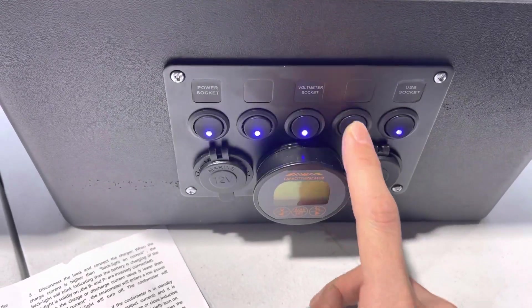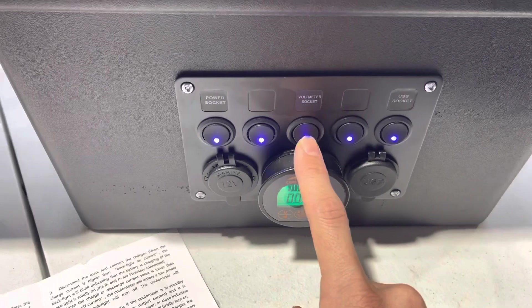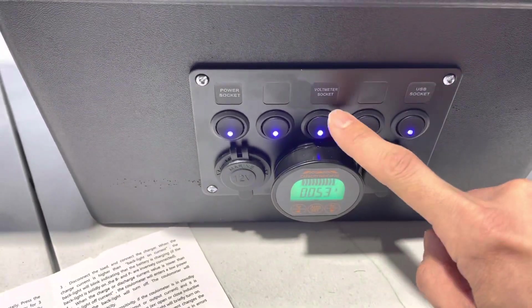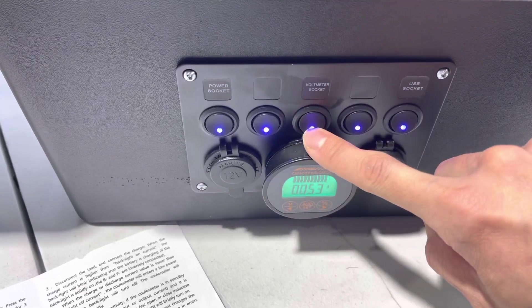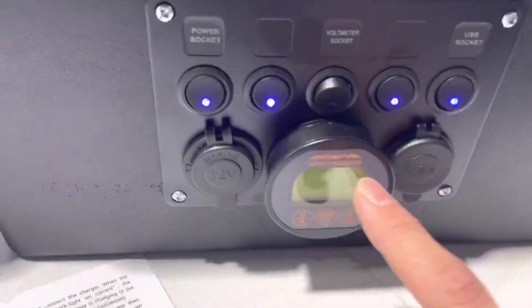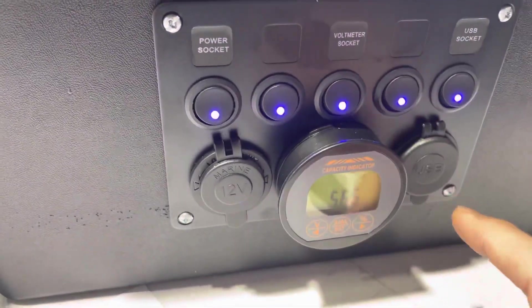This panel here I need to figure out how to label, this is actually going to be my master switch. This powers everything up front, I have the switch to wire it's up the voltmeter socket.